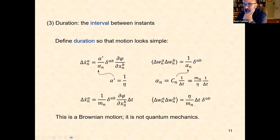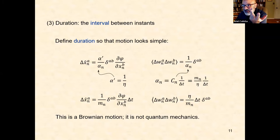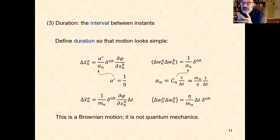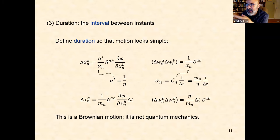This is Brownian motion — it is not quantum mechanics. Whenever you do a maximum entropy calculation and do not get correct probability distributions, you may have chosen the wrong variables or the wrong constraints. As far as short steps go, there is nothing wrong here. But when we try to accumulate these short steps, this is just a diffusion process — not yet quantum mechanics. So how do we accumulate these short displacements?